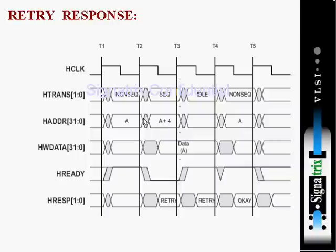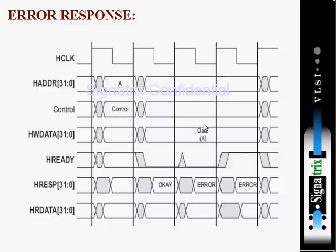Looking at this diagram — clock signal, transfer type — suppose this is a burst transfer. The first clock cycle will have the non-sequential transfer. This slide gives the timing diagram for error response, which is similar to a retry response. It is also a two-cycle response.